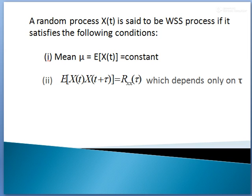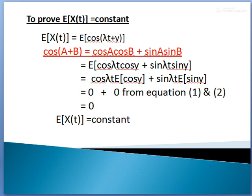Now, to prove that x(t) is a WSS process, we need to prove two conditions. First condition: E[x(t)] = constant. Second condition: E[x(t)·x(t+τ)] = R_xx(τ), which depends only on τ. We are going to prove the first condition: E[x(t)] = constant.